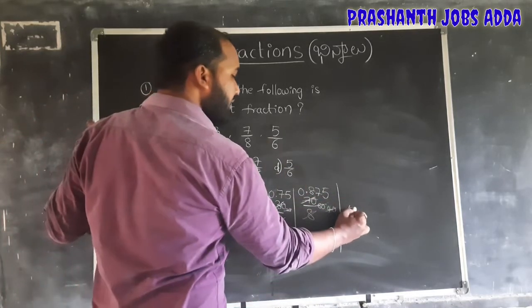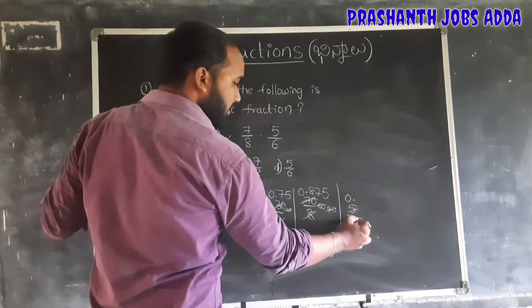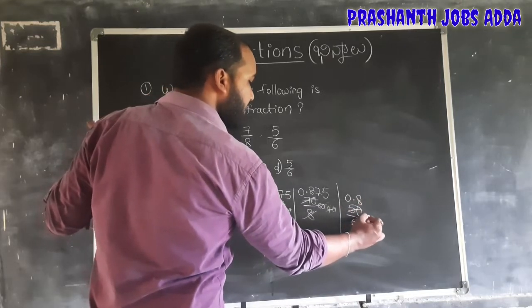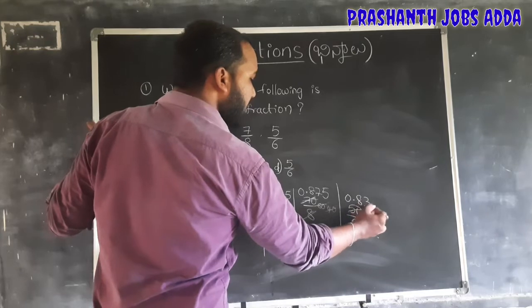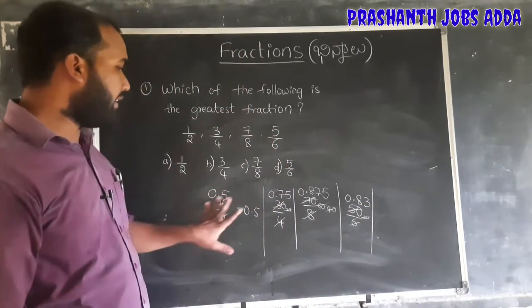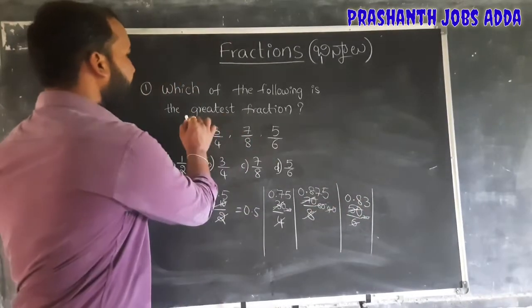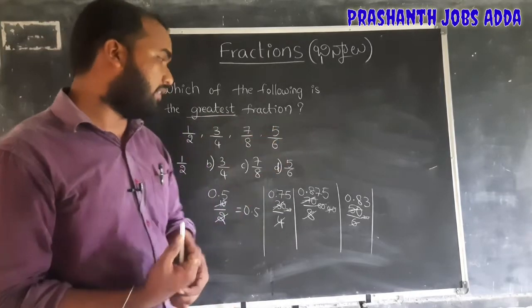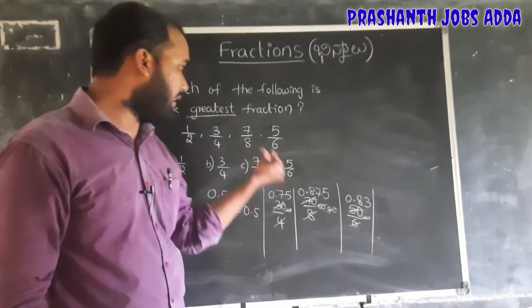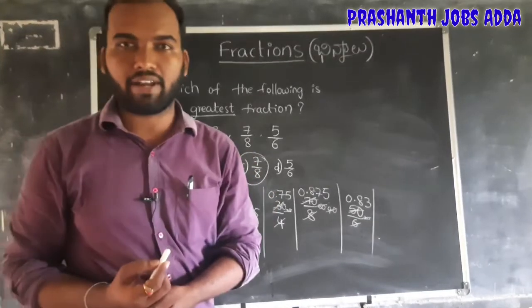Next, 5 by 6 gives 0.833. So the values are 0.8, 0.75, 0.875, and 0.833. Comparing these, 0.875 is the greatest fraction — that is the third option. So 0.875 is the greatest fraction.